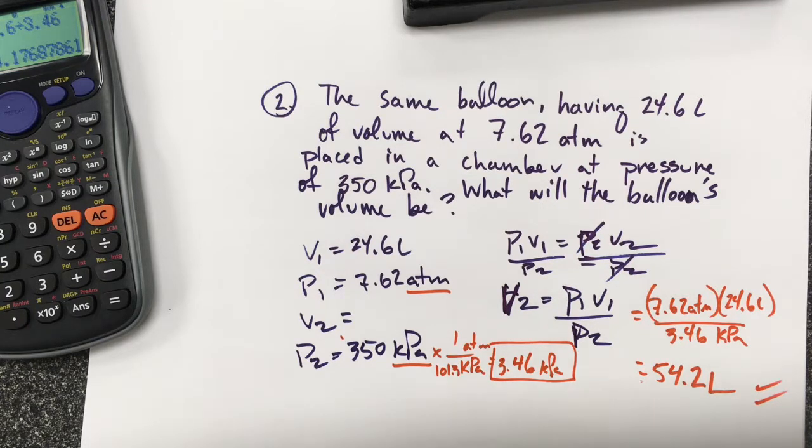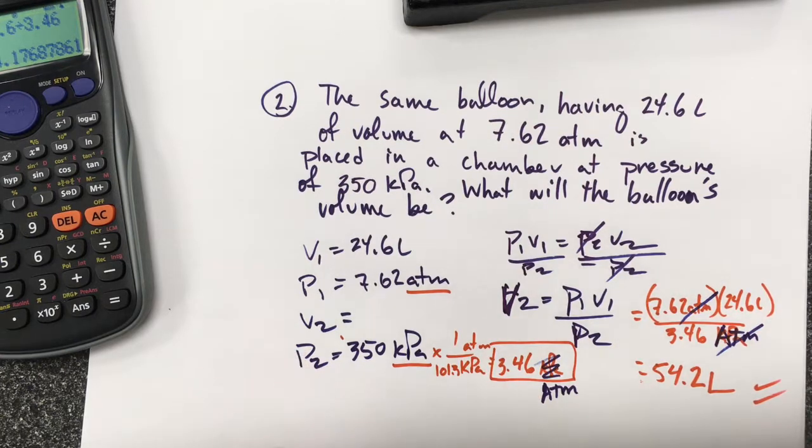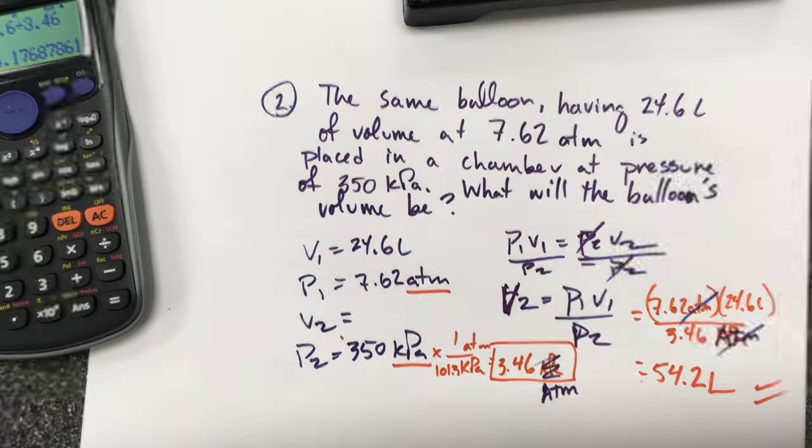Again, if you do not understand that the units need to cancel each other out... Oh, and I made a mistake here. This wasn't kPa. This is atm. So this was atm. So those canceled out. It leaves me with liters. By putting in my units, I can see that I made a mistake somewhere, and you need to be able to check to make sure that your units cancel out. If you made a mistake, find it, and then go back and fix it.